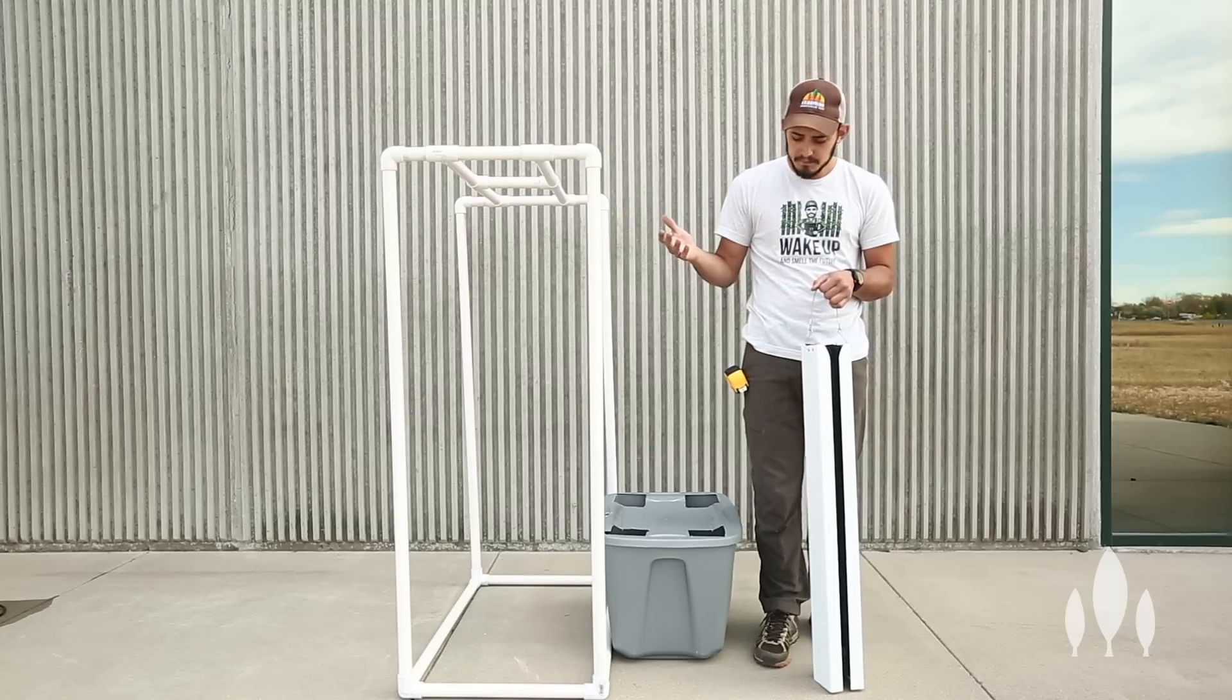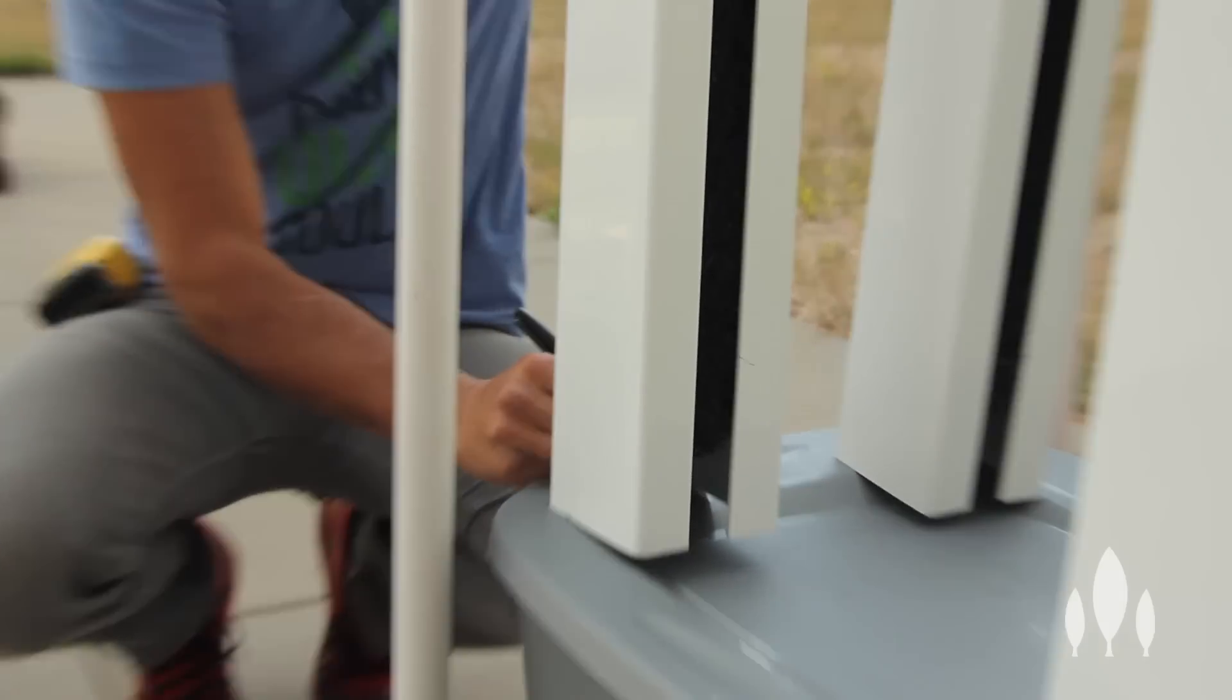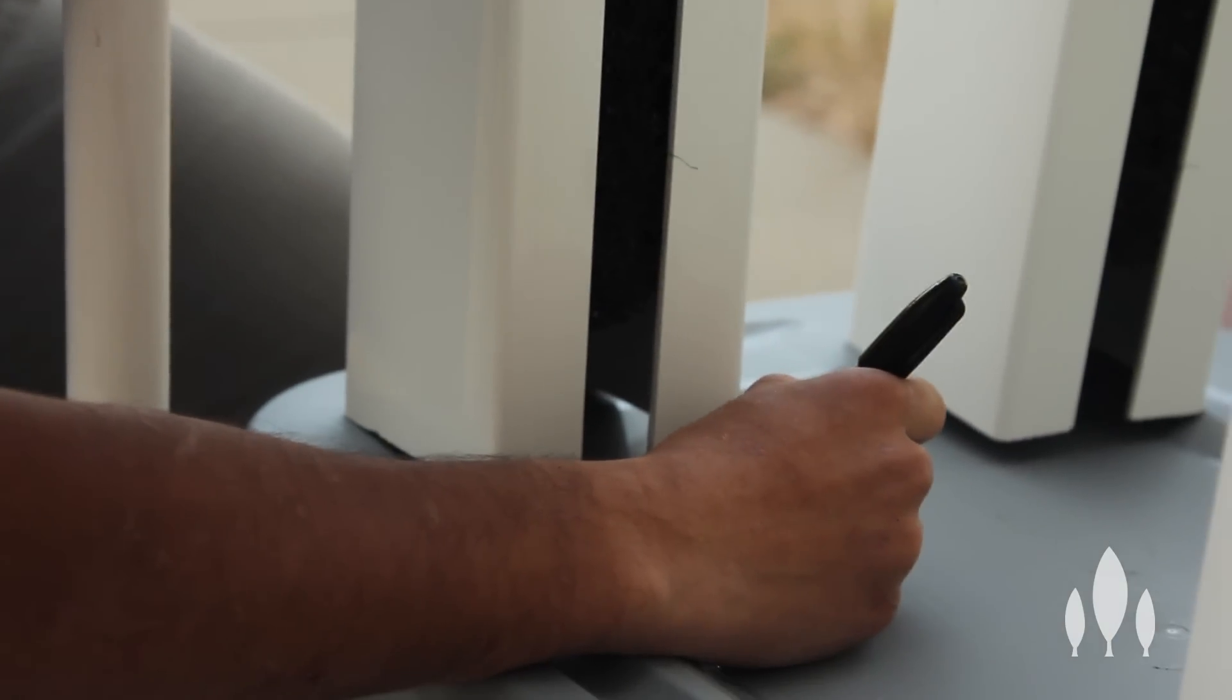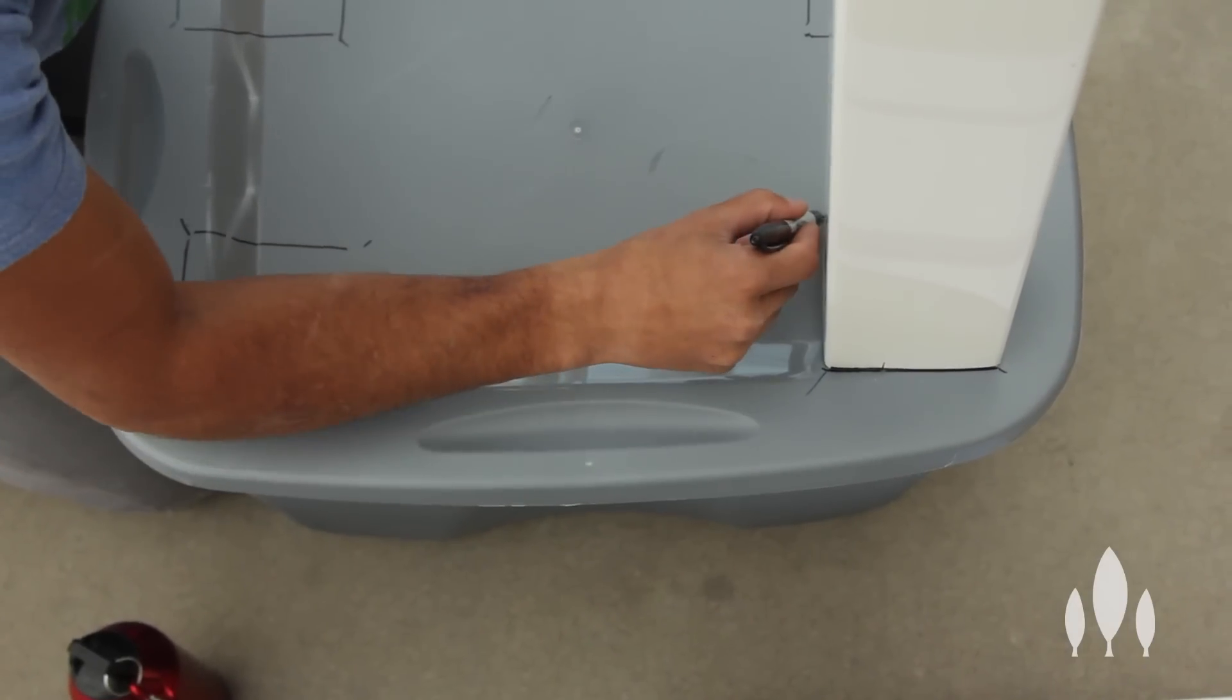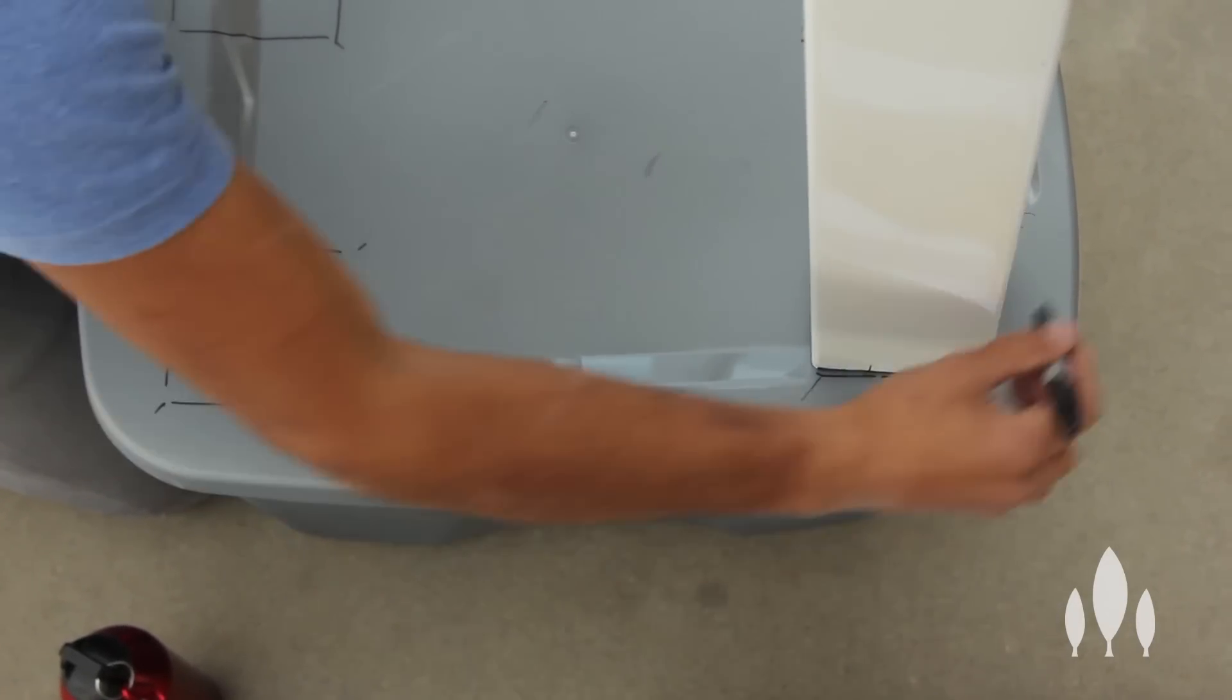What I did is I built the frame, hung my towers above my sump, and then I marked out the bottom of my towers on my sump, which happened to be just as far out as I can get on this tote in the corners. That left me just enough space for all my towers.